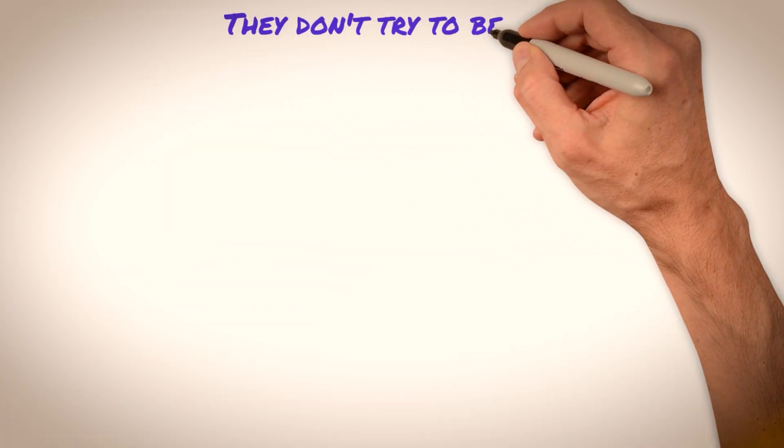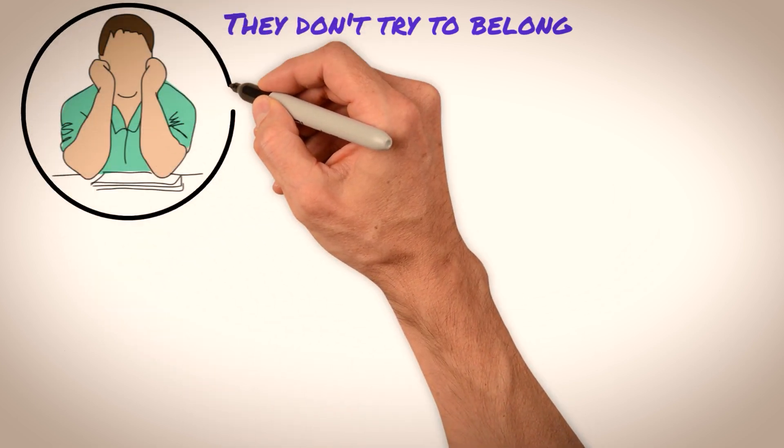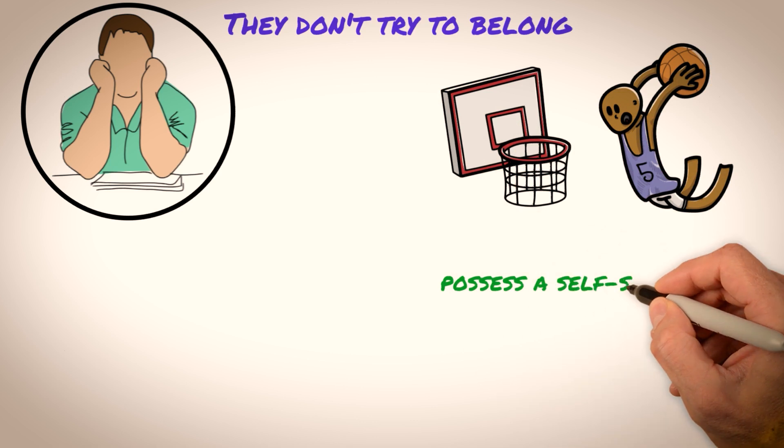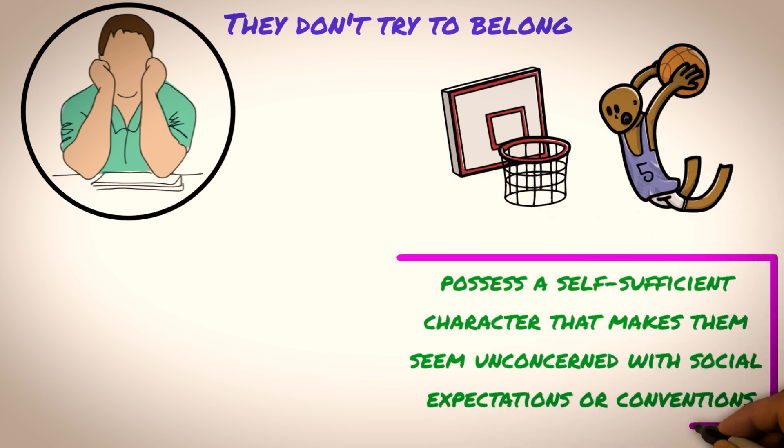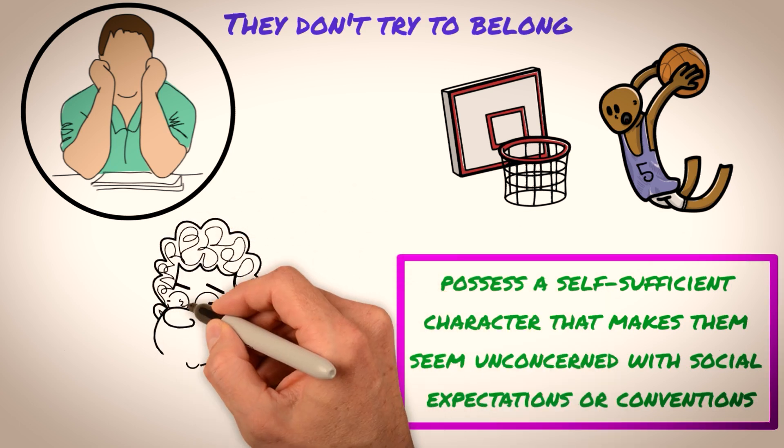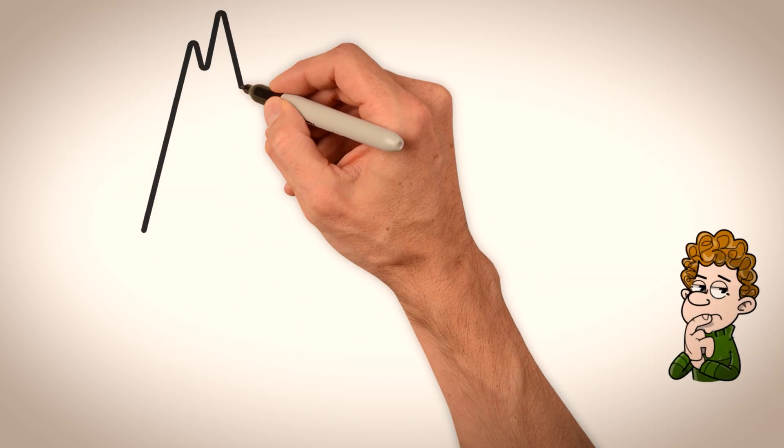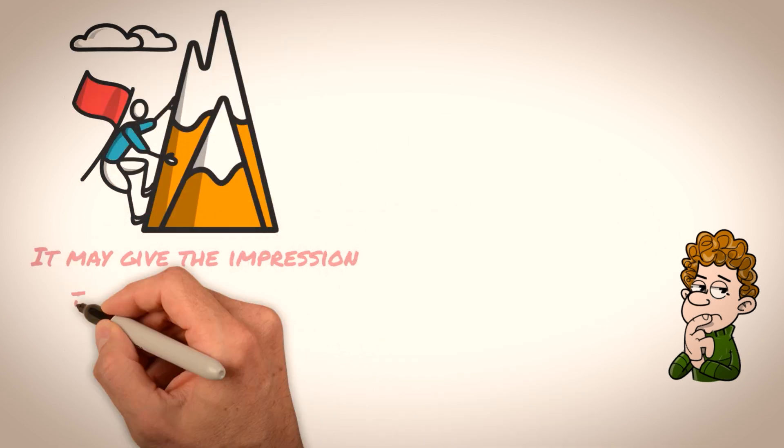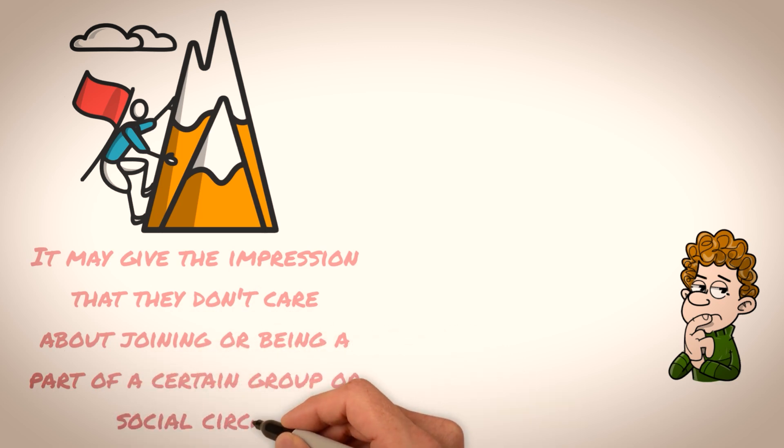They don't try to belong. The idea that Sigma males don't try to belong can contribute to their intimidating nature. Sigma males tend to value their independence and autonomy and have a self-reliant nature that makes them appear indifferent to social norms or expectations. Sigma males are often independent thinkers who may not conform to societal expectations or seek approval from others. They have a strong sense of self and are confident in their beliefs and values, which can make them appear uninterested in fitting in or belonging to a particular group or social circle.